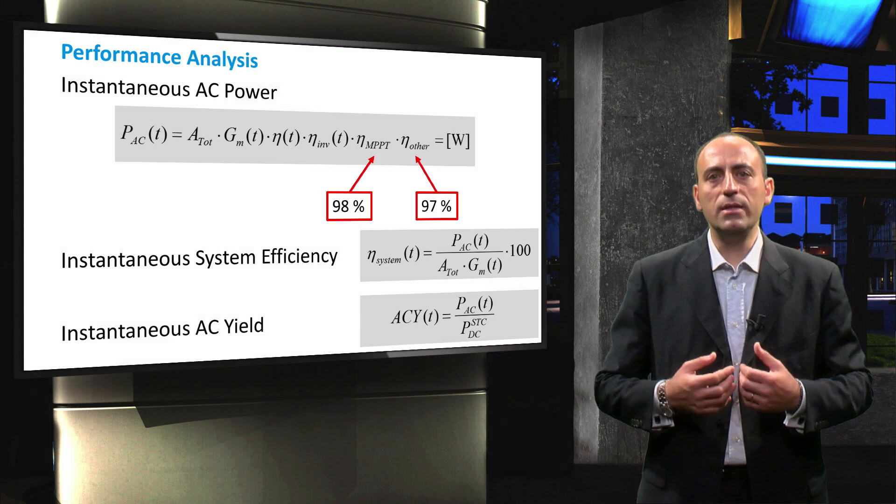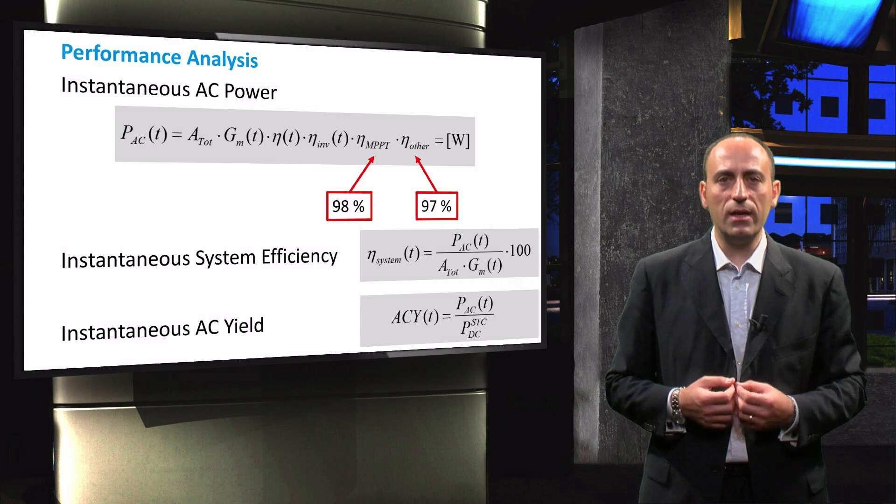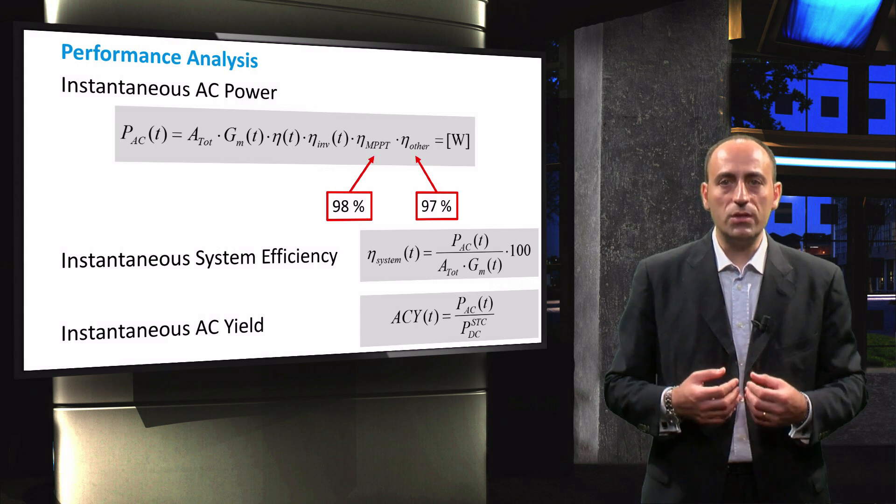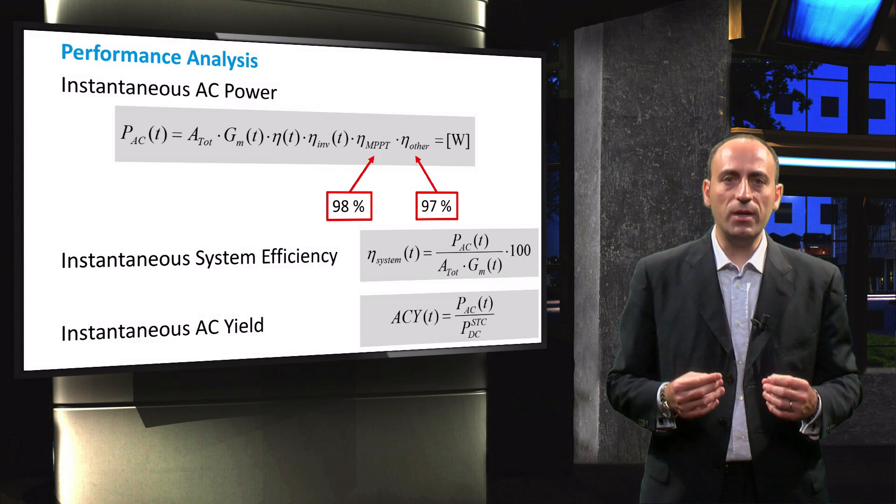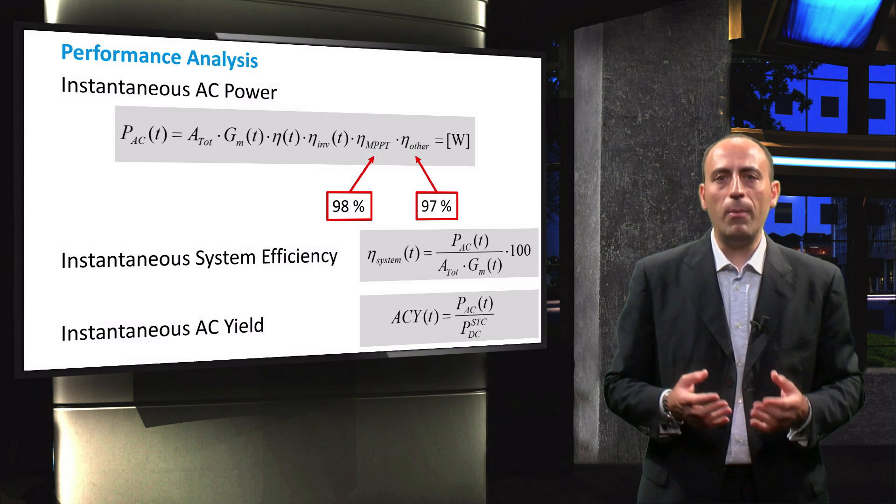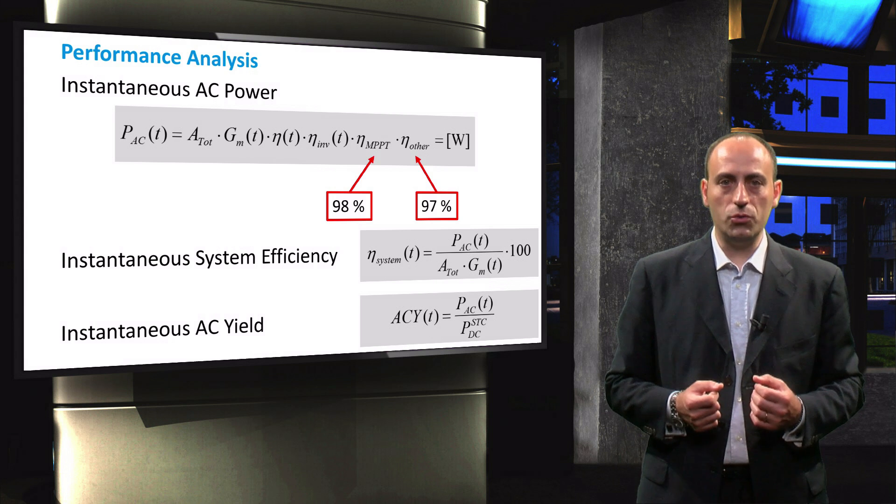Next, the instantaneous AC side yield, ACY, which is also known as the performance ratio, is calculated. It is obtained by dividing the instantaneous AC power by the nominal power of the PV modules.